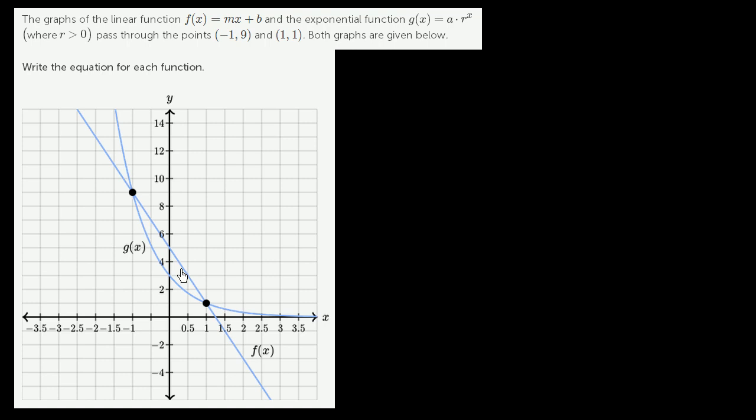So this very clearly is the linear function, it is a line right over here, and this right over here is the exponential function. Given the fact that this exponential function keeps decreasing as x gets larger and larger, it's a pretty good hint that r is going to be between 0 and 1, as g(x) keeps approaching closer and closer to 0 as x increases. But let's use the data they're giving us, the two points of intersection, to figure out what the equations of these two functions are.